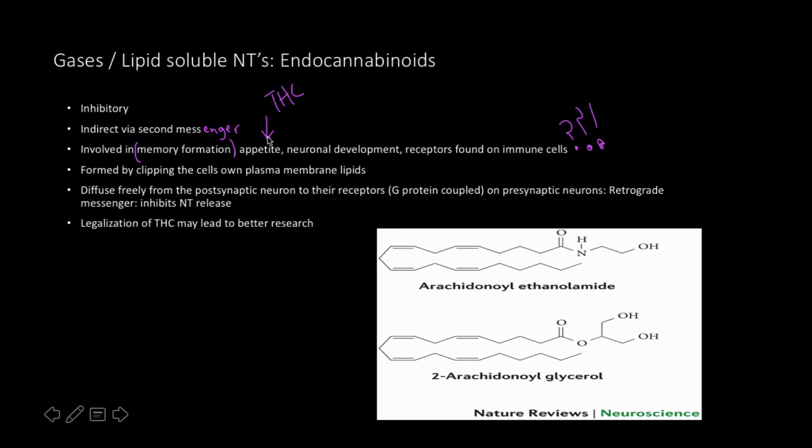We know that it affects appetite. Another form of this would be THC, otherwise known as the munchies. Neuronal development, all this stuff here, I don't really know how much we know about this stuff and how much of this is just correlation rather than an actual established mechanism. But anyways, it's formed by clipping the cell's own plasma membranes. And if you look at this you can actually see that it kind of looks like the little fatty acid tails of a phospholipid bilayer. And so since it's obviously lipid soluble it will diffuse freely from the postsynaptic neuron.